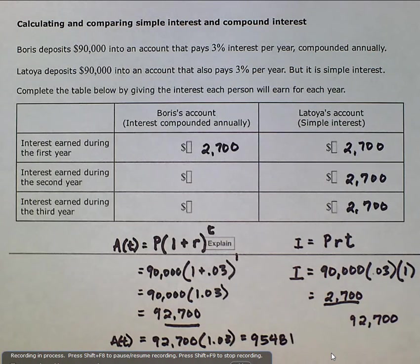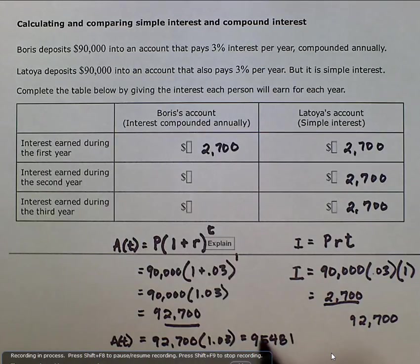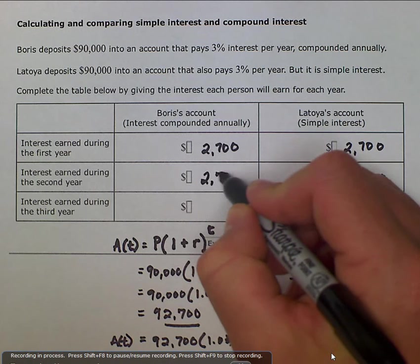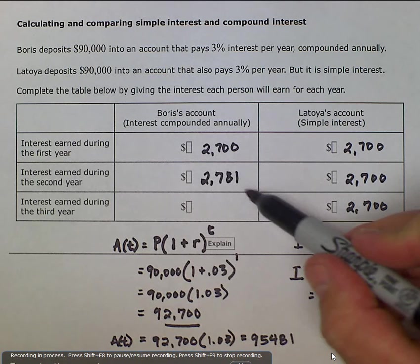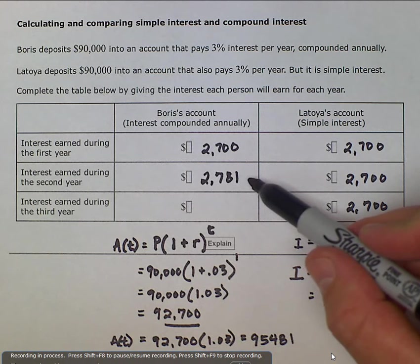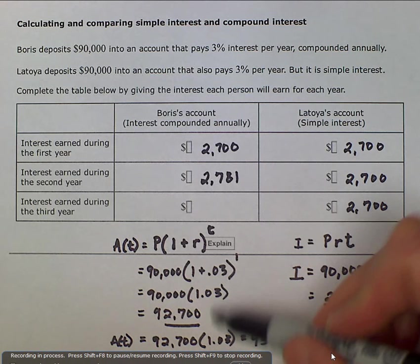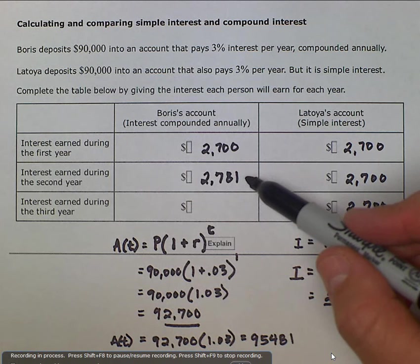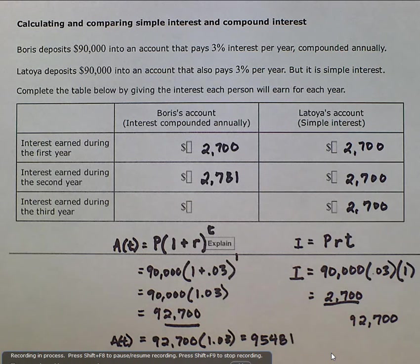Now if we want to see the difference, we would subtract 92,700 from 95,481, which gives us a difference of 2,781. So notice that there was an $81 increase when we considered the interest as we compound it rather than a simple interest.